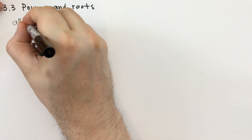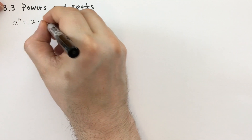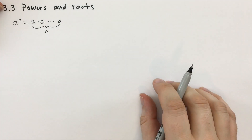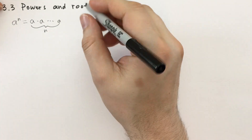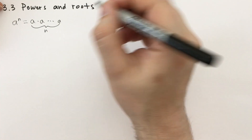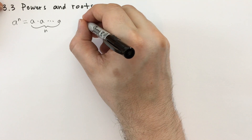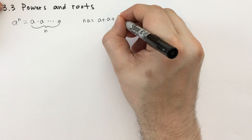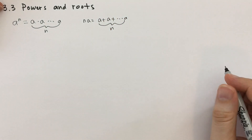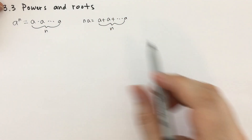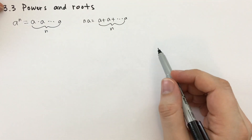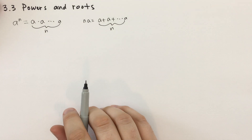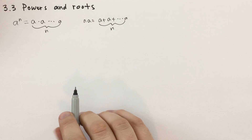What this means is you're basically taking a times itself n times. That's somewhat related to what we do with multiplication: n times a is the same as a plus itself n times. But this only works when n is an integer, so we're going to derive the rules for how this works with non-integer exponents.